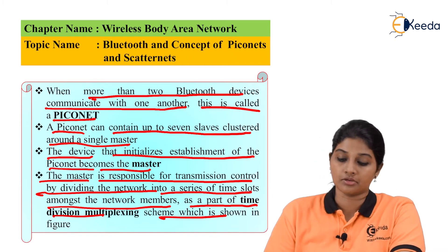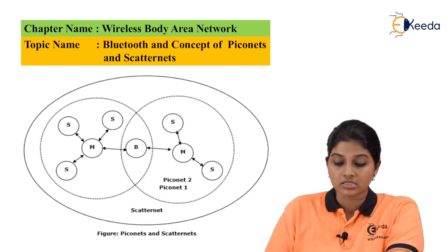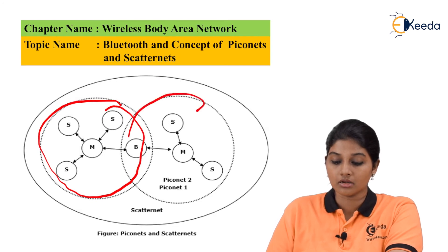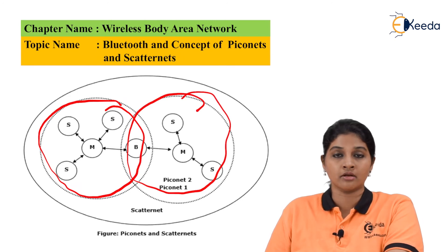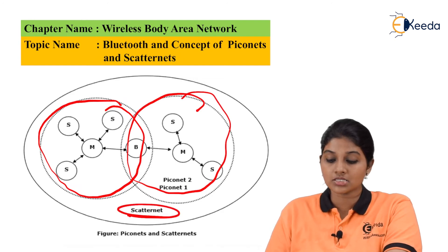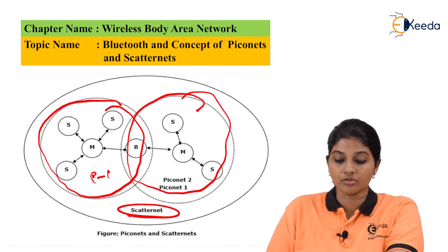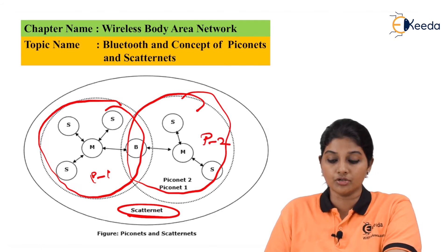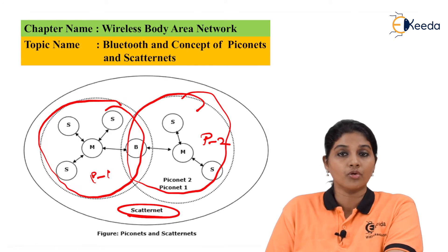In the figure of Piconet and Scatternet, M represents master and S represents slaves. This single network is called Piconet 1, and the other single network is called Piconet 2. When two Piconets interact with each other, they form a Scatternet. So when two or more Piconets connect with each other, it forms a Scatternet. In each Piconet, M indicates master and the remaining devices act as slaves.